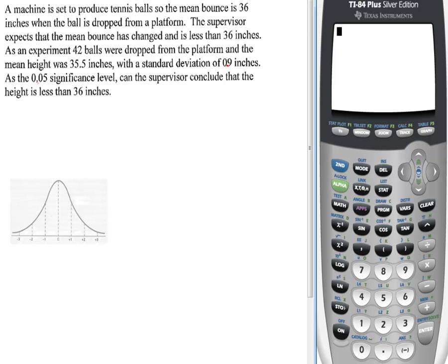At the 0.05 significance level, can the supervisor conclude that the height is less than 36 inches? So basically, is the machine still doing what we expect and getting tennis balls that bounce at 36 inches? Or has it changed? And the change is, is it less than 36?